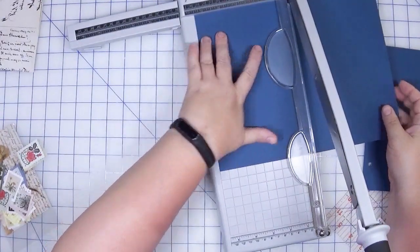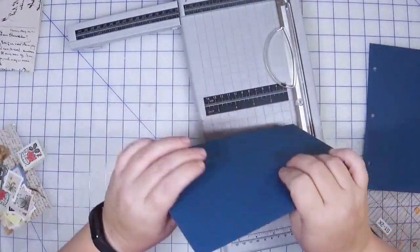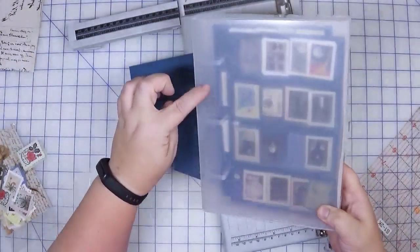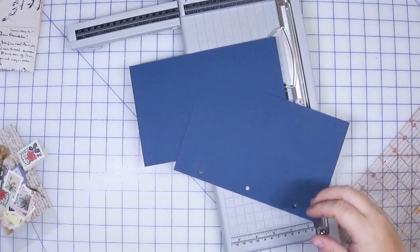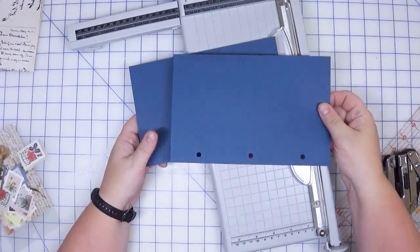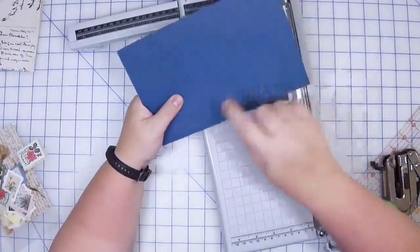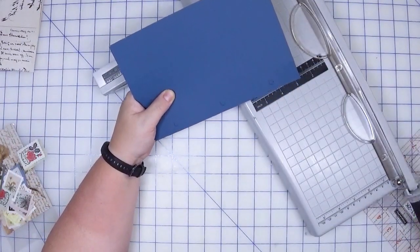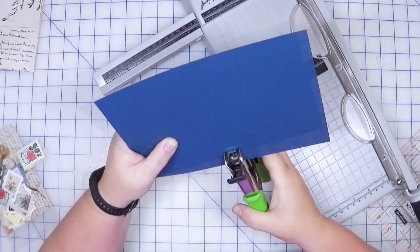I'm just going to turn it on its side, trim at five and a half, stack them together. I measured where the holes were for the rings and I created a template. I just did that with copy paper until I figured out exactly where I wanted them to be. If you have something that has a three-hole system and it fits in whatever binder you're using, you don't even need to make a template. We're just going to punch holes.